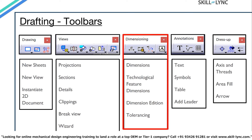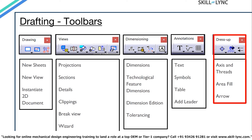We can add dimensions and tolerances to the views from the Dimensioning toolbar. Next is the Annotations toolbar, using which we can add text, symbols, tables, and add leaders on the views. Next is the Dress-up toolbar, which allows us to highlight axes and threads, area fill, etc.